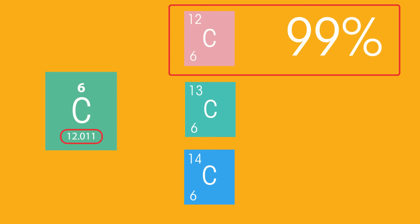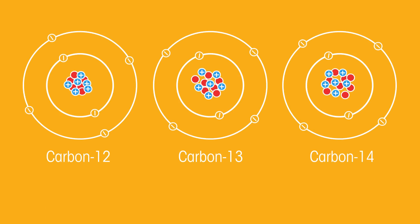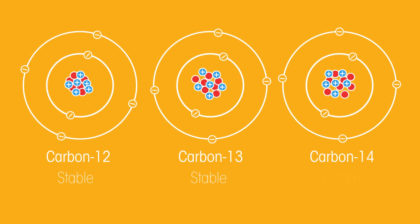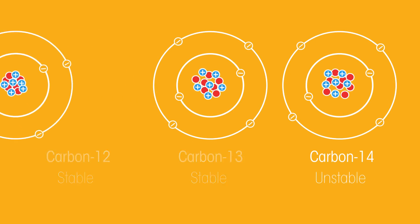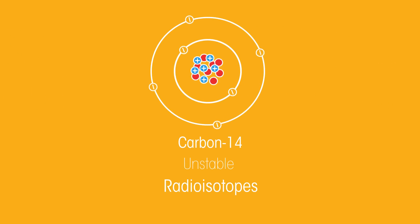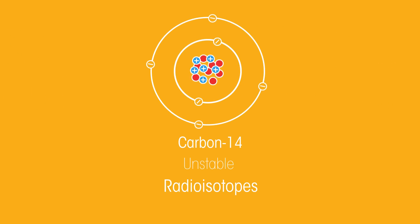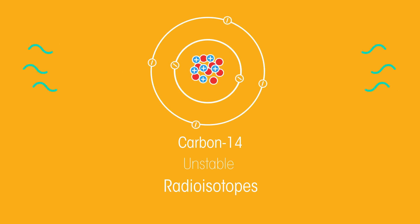Only very precise measurements can show this. Some combinations of protons and neutrons are stable, but some are unstable, which means the nucleus doesn't last very long. These are often called radioisotopes because, when they break down, they give out nuclear radiation, which we'll look at in the next video.